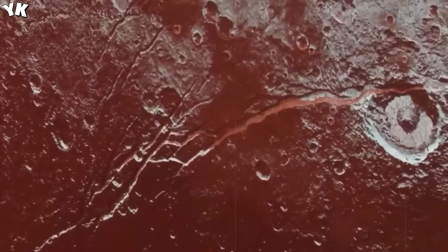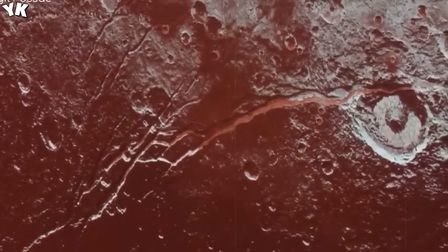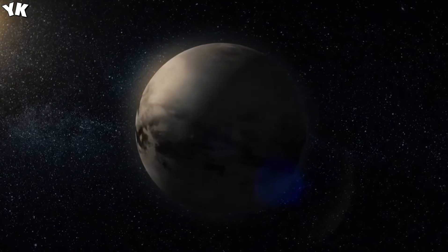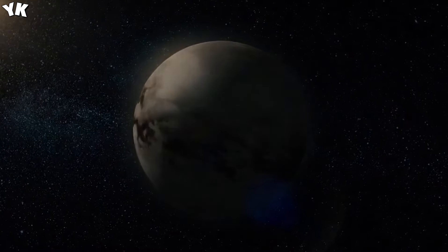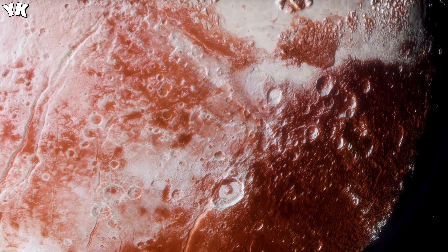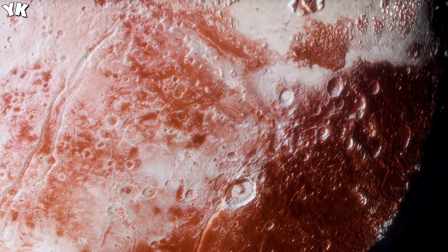Pluto, once considered a distant and inactive icy mass, now appears to harbor a dynamic and intricate subterranean world. The idea of a liquid ocean beneath its icy shell has gained traction, supported by evidence such as extension fractures and the absence of significant craters in certain regions.